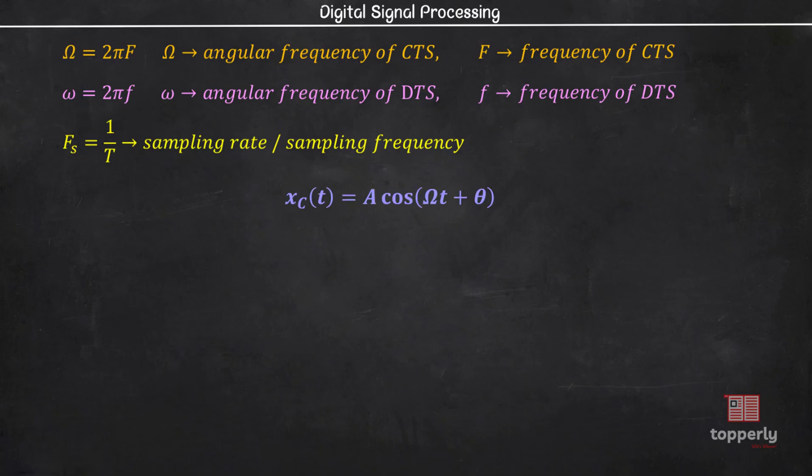To do that, consider a continuous time signal of the form Xc of t equal to A cos capital omega into t plus theta. This signal is sampled with a sampling frequency Fs equal to 1 by T.